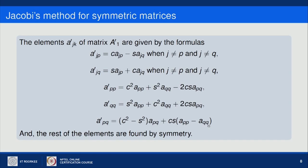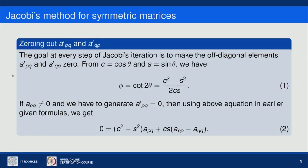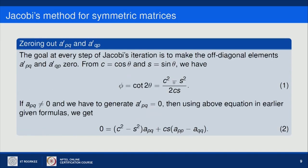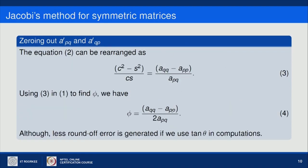We want to make A'_pq = 0. Setting it to zero: (C² − S²)·a_pq + CS·(a_pp − a_qq) = 0. Defining phi = (a_qq − a_pp) / (2·a_pq), this equals cot(2θ). Therefore tan(2θ) = 2·a_pq / (a_qq − a_pp), and θ = (1/2)·arctan(2·a_pq / (a_qq − a_pp)).